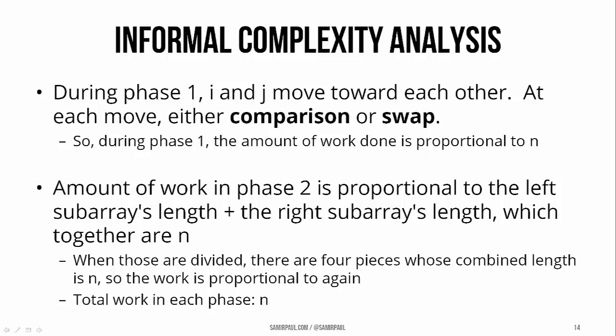During the first phase, we start i and j at either end and we move them toward each other. And every time, at every move, either an element is getting compared to the pivot or we're doing a swap. As soon as i and j pass each other, the whole process stops. So we know that the amount of work that we're doing during phase 1 is roughly proportional to n, which is the length of the array.